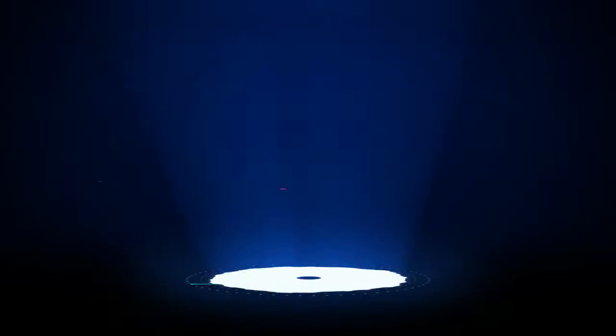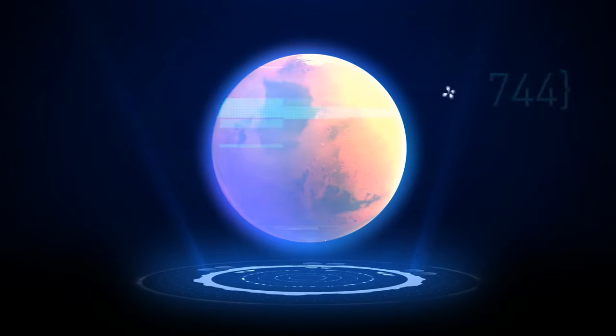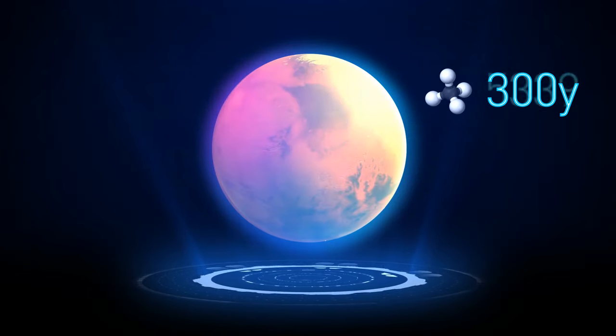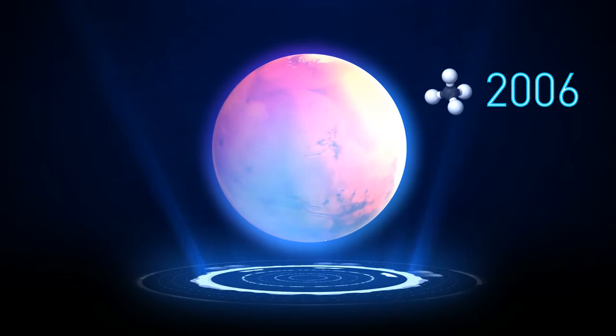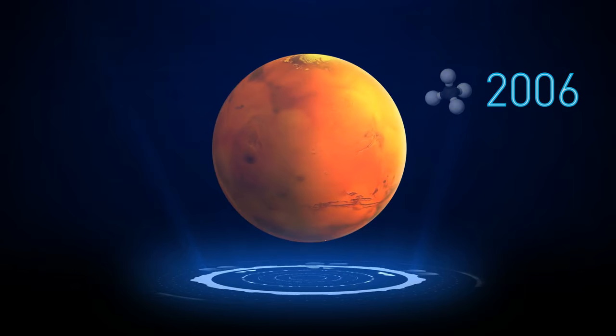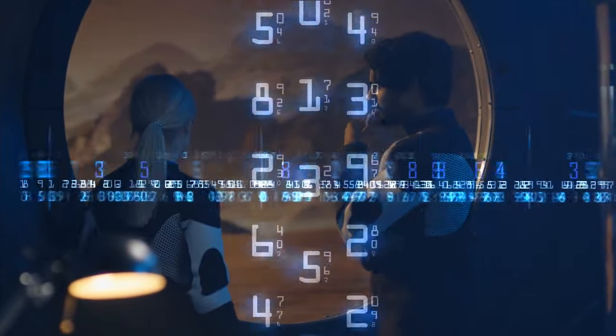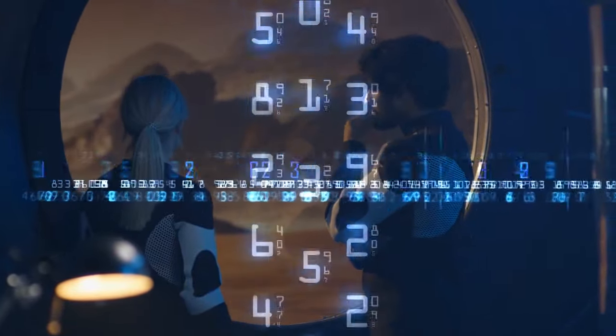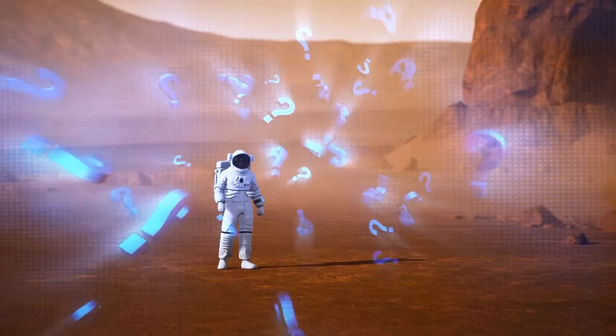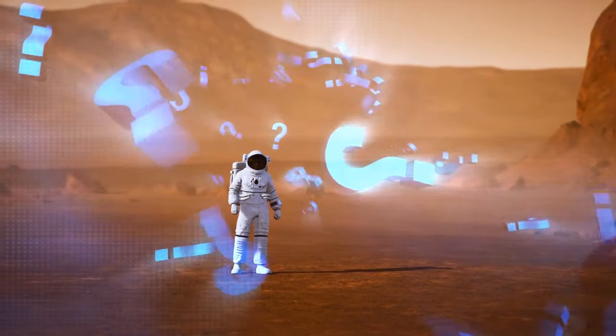However, scientists think that methane was stable in the Martian atmosphere for about 300 years. And then, in 2006, the methane almost entirely vanished from the Red Planet. And it happened 600 times faster than the researchers' model accounted for. The question? What, or who, generated the gas? And where did it go?